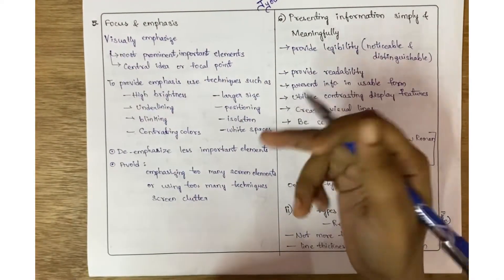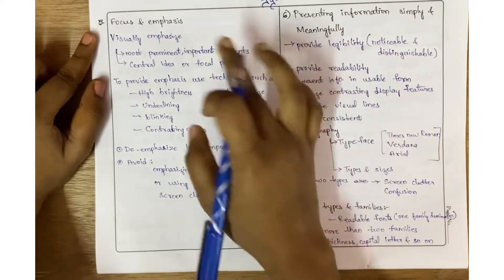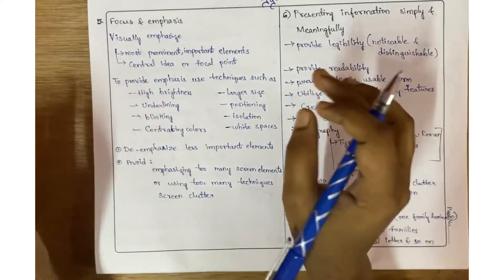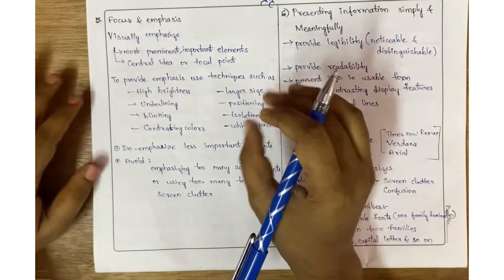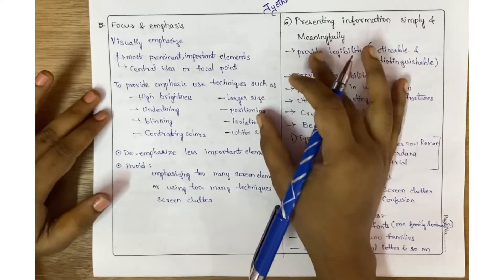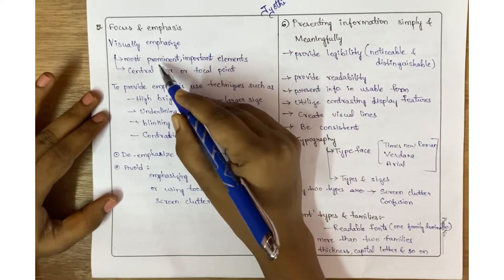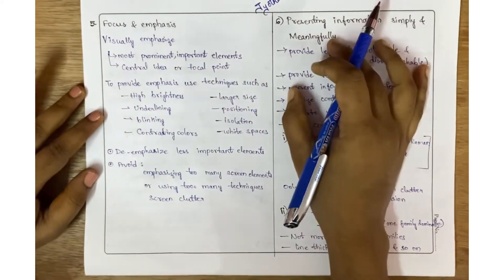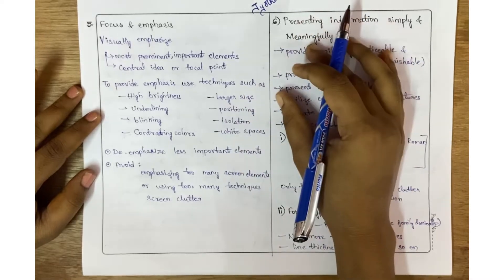The fifth parameter is focus and emphasis. Focus and emphasis is about what we need to emphasize visually. We need to emphasize the most prominent and important things, the central idea and focal point.